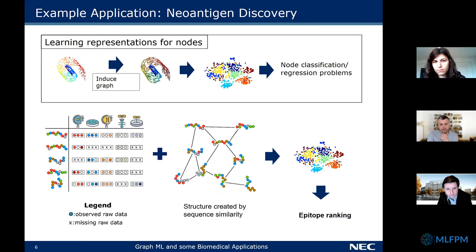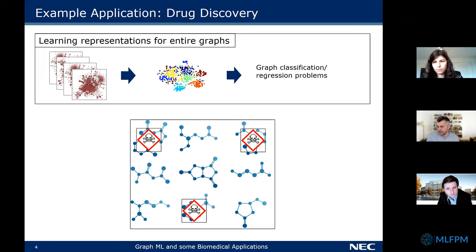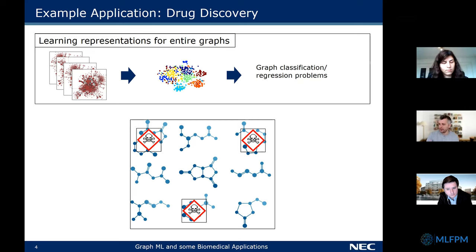At the moment, the answer is no. What a graph neural network really does is learn a mapping from the feature space associated with the nodes to the embedding. If you don't have a particular feature at all during training, it's not possible to just add it after the fact. If you add a completely new feature type that you didn't have before — not just a new value for an existing feature — then you really have to retrain.